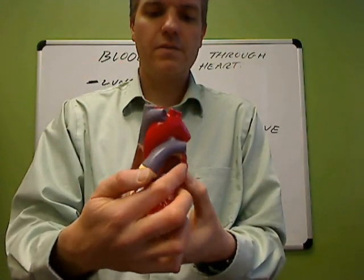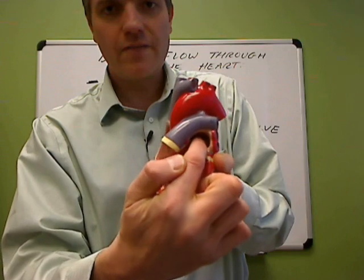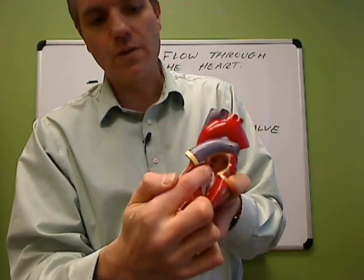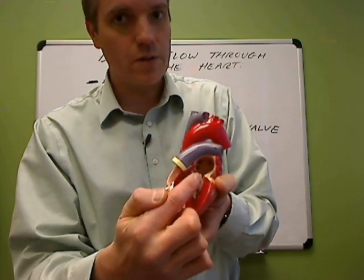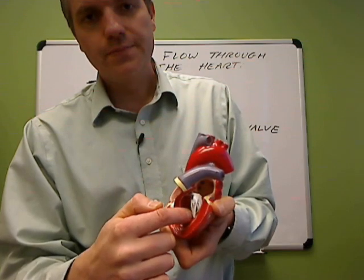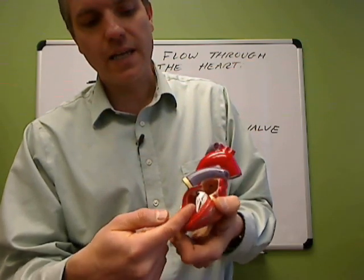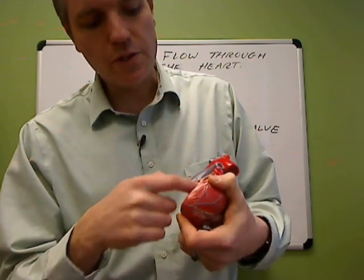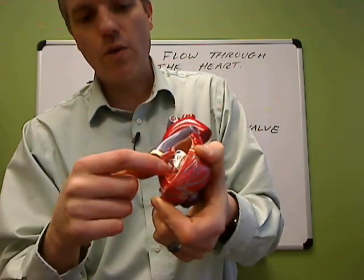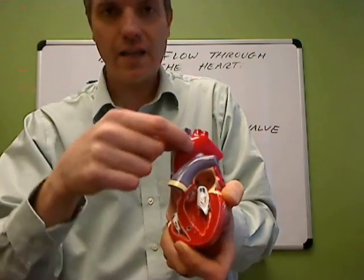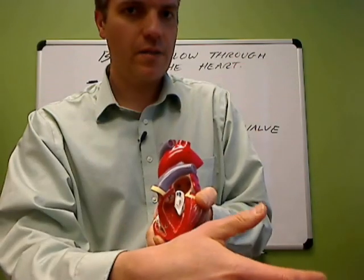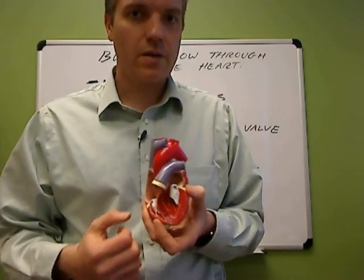Blood comes back from the lungs through the right and left pulmonary veins into the left atrium. From the left atrium, it passes through the left atrioventricular valve — also called the bicuspid valve or mitral valve — into the left ventricle. The ventricles contract again and the blood is pushed through the aortic semilunar valve and then into the aorta. Arteries branch off the aorta, take the blood out to the body, and we start all over again.